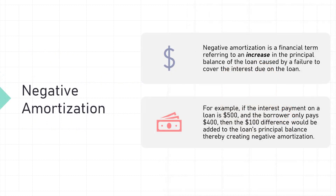Negative amortization is a financial term referring to an increase in the principal balance of a loan caused by a failure to cover the interest due on that loan. For example, if the interest payment on the loan is $500 and the borrower only pays $400, then the $100 difference would be added to the loan's principal balance, thereby creating negative amortization.